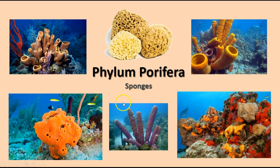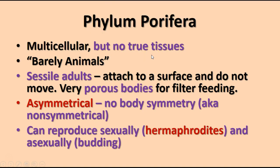Phylum Porifera — the word 'porifera' means full of pores, and you can see in the picture of the bath sponges that they do have a lot of pores and openings. Porifera are very simple. They are multicellular but don't have any true tissues. They have several different kinds of cells that do specialized jobs, but they're not well organized in terms of tissues and organ systems. I usually say that the sponges are just barely animals — they meet the definition and that's just about it.